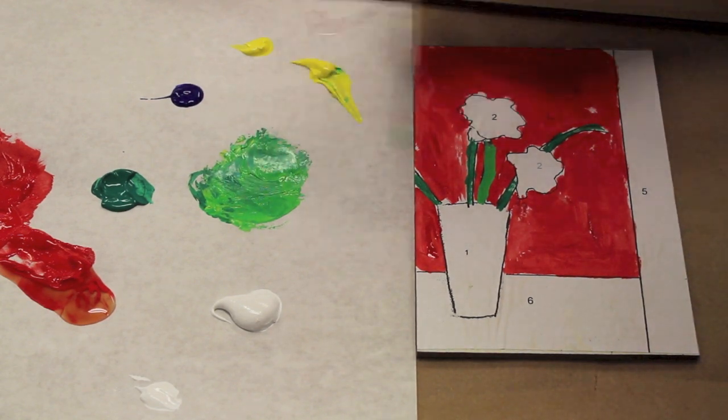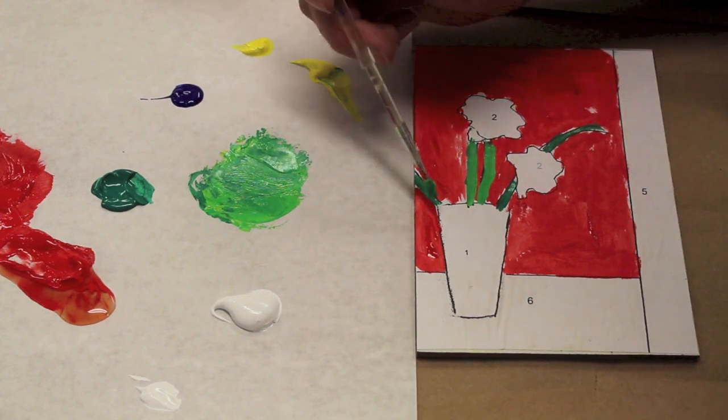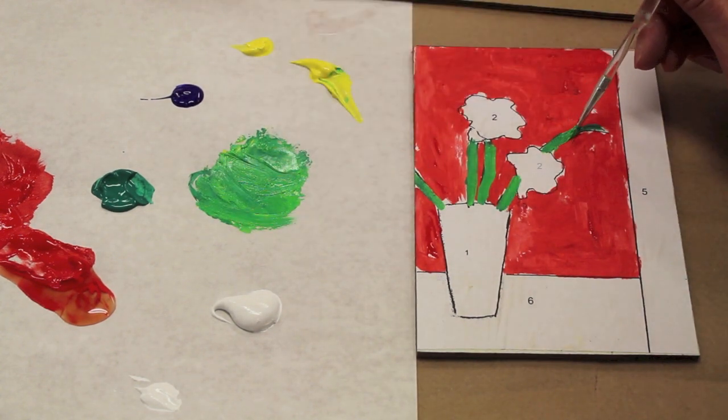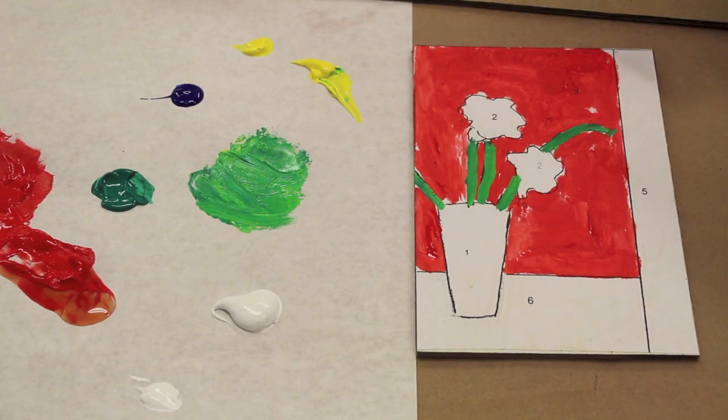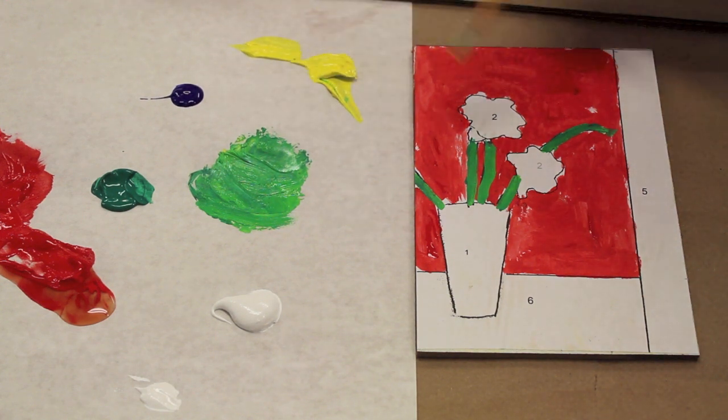For the daylilies—that's what these flowers are—I'll use yellow right out of the tube. This is cadmium yellow.